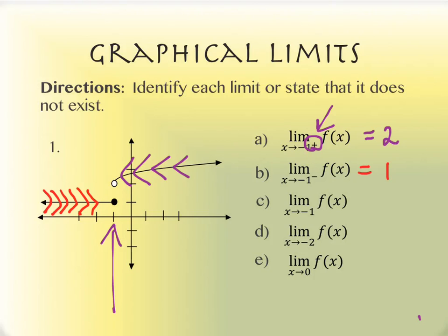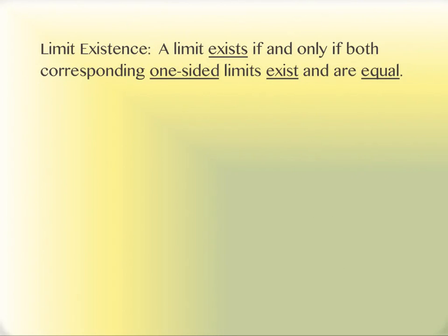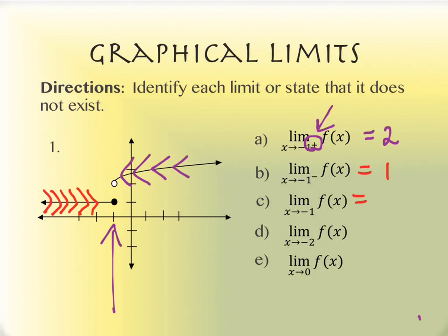The third part doesn't have a plus or a minus, which means I need to be approaching negative one from both sides. But this only works if they get close to the same value. And what happens here? They don't. One is approaching 2 and the other is approaching 1. There's a jump in the graph there. When that happens, the limit does not exist. The reason it doesn't exist is because the left-hand side and the right-hand side are not getting close to the same value.